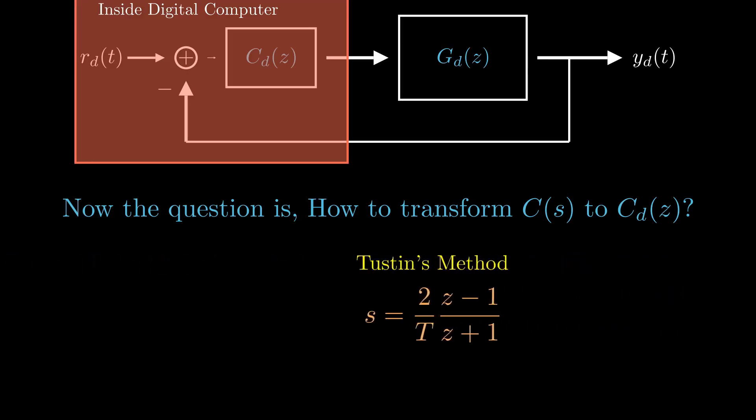For this example, let's proceed with Tustin's method. We can obtain C_D(z) by substituting 2 over T, z minus 1 over z plus 1 for s in C(s).